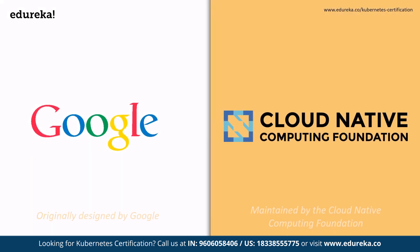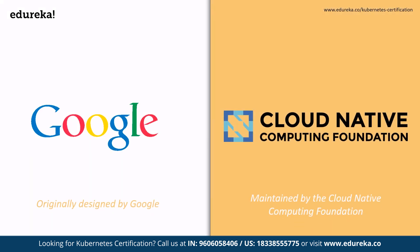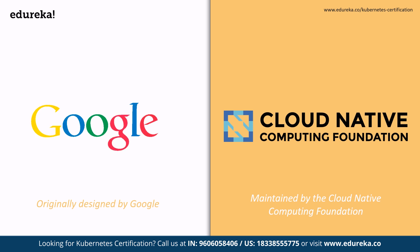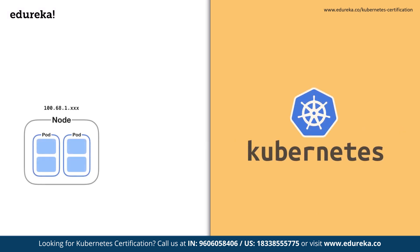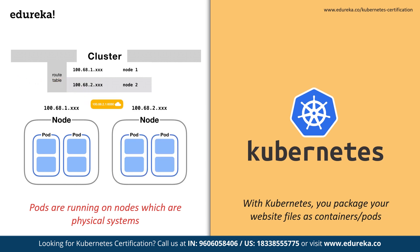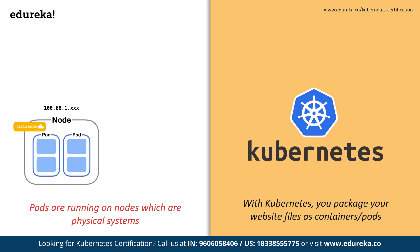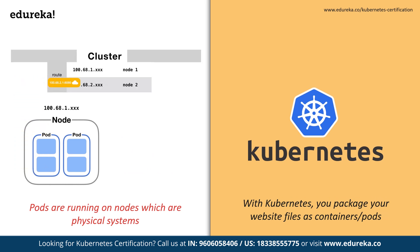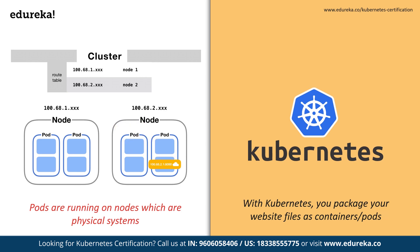Kubernetes was originally designed by Google and is now maintained by the Cloud Native Computing Foundation. With Kubernetes, you package your website files as containers or pods, which you can run on any instance in your Kubernetes cluster. As you can see, pods are running on nodes, which are physical systems having hardware components that are a part of the Kubernetes cluster. This implies that every service you create runs on separate containers, allowing you to work and manage services independently. Pods can be running on any available node in the cluster that has enough resources for a pod to work.